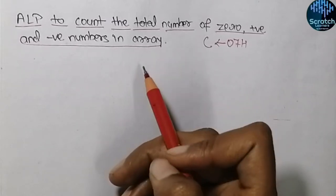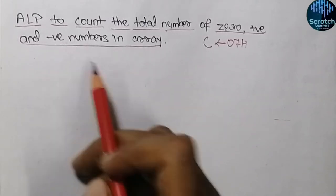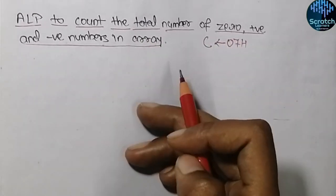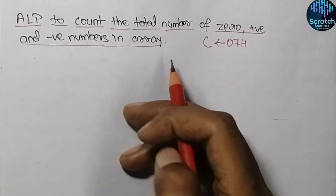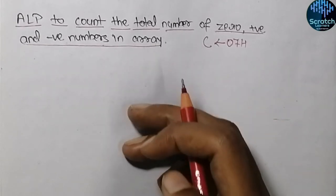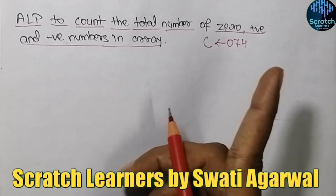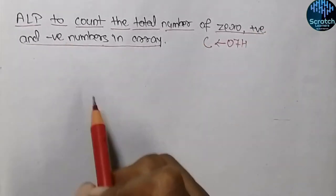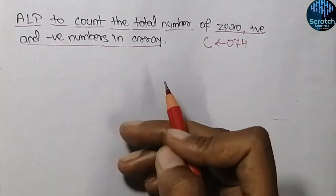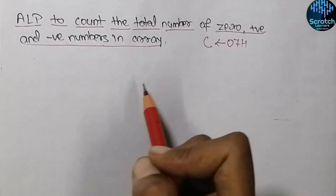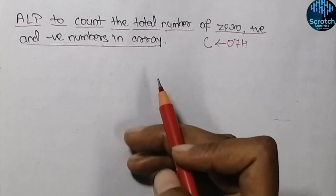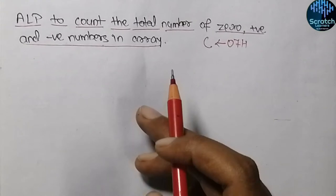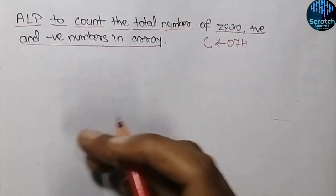Hello guys and welcome to our video in which we will teach the assembly language program to count the total number of zeros, positive and negative numbers in an array. In the previous video, we saw how to find the total number of odd and even numbers in an array, and just by replacing a single instruction we converted it into a program which counts the total number of positive and negative numbers. Today we will see another method to count the total number of zeros, positive and negative numbers, and this method is much more precise than that previous method.